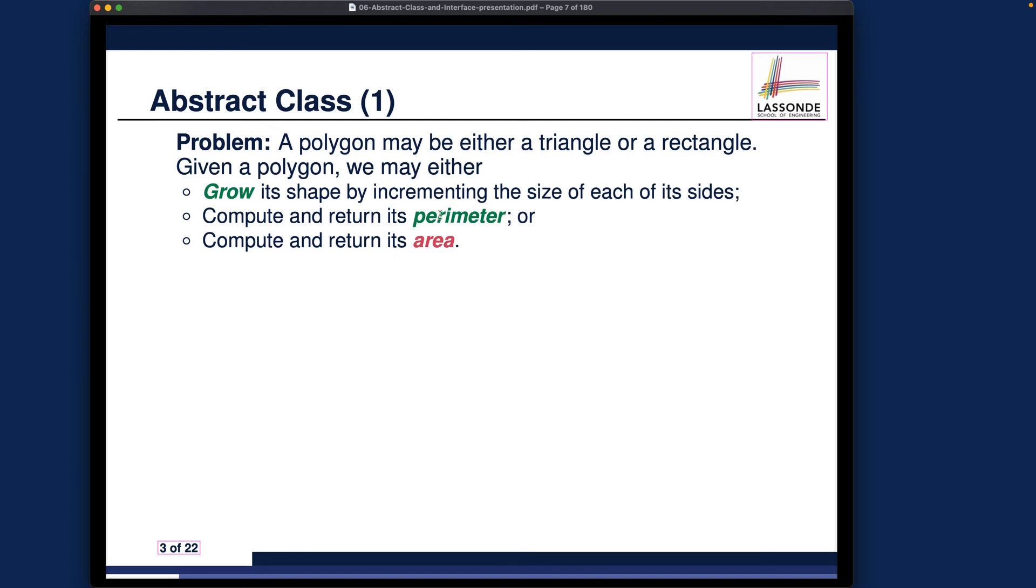Assuming that you thought about it, this should be the answer. Given that triangle and also rectangle are both polygons, the way we implement it can just be an array of integers. Triangle is going to be an array of size three; rectangle is going to be an array of size four. In order to grow the shape by incrementing the size of each of the sides, we can simply increment each of the three members in the triangle array, and in this case we can increment each of the four members of the rectangle array.